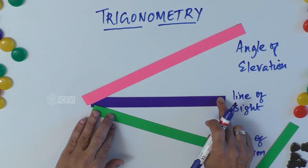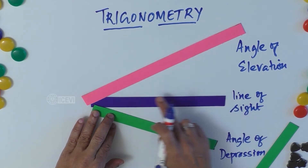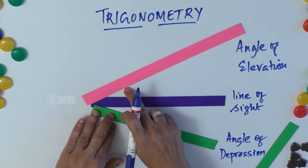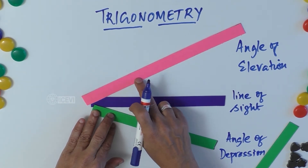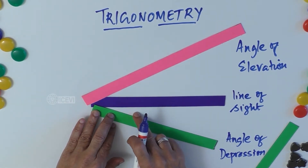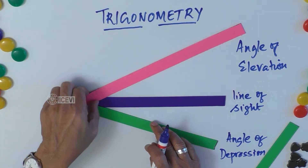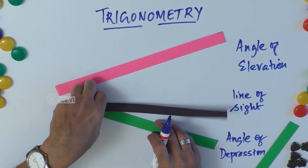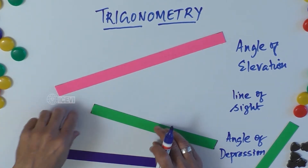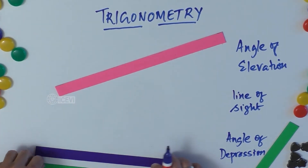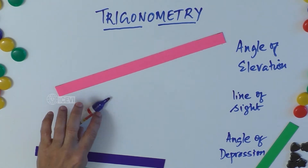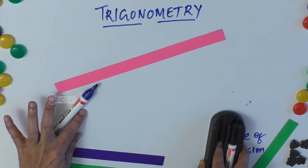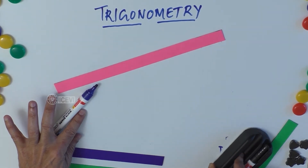So these are some general concepts we will use in trigonometry: line of sight is the straight line, angle of elevation is when you are looking up, and when you look down we call that the angle of depression. Let us now see how the angle of elevation changes.